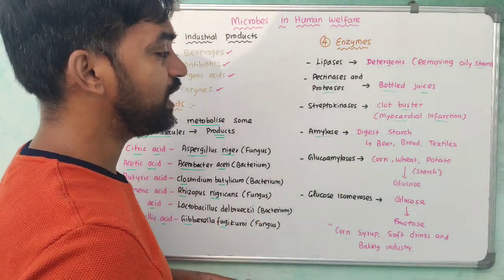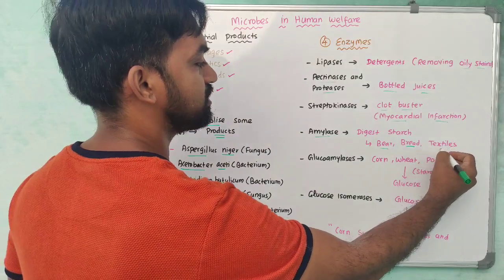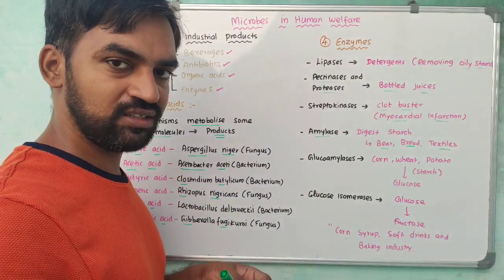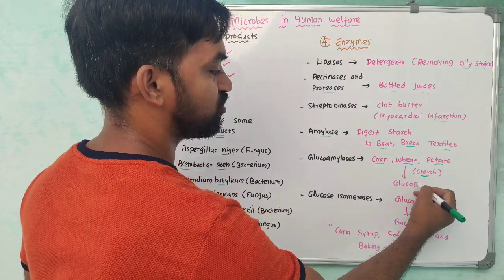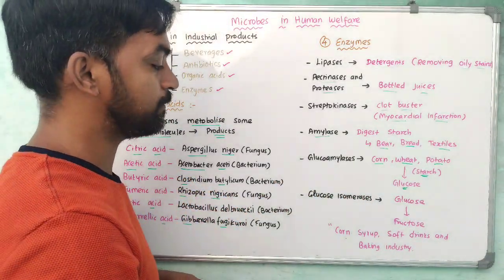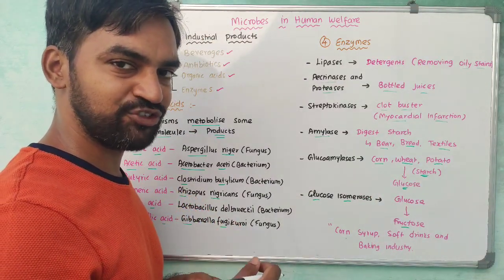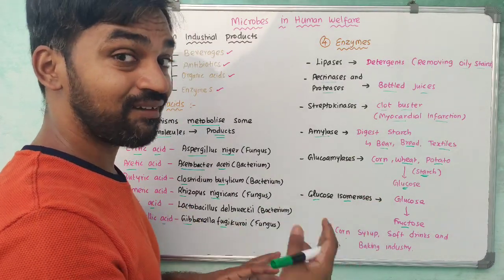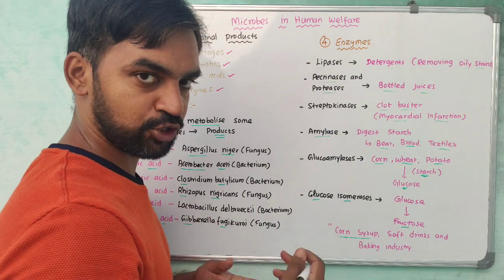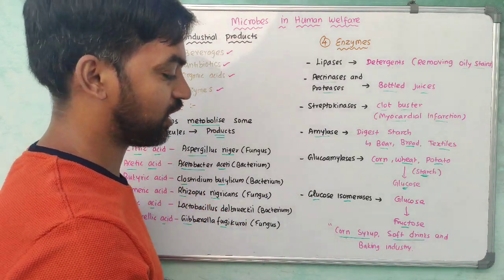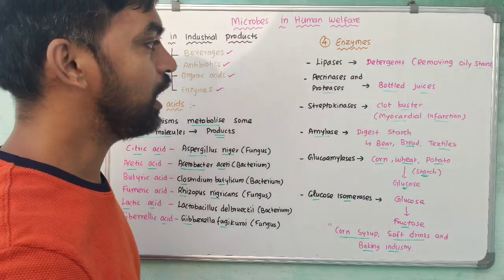Amylase digests starch and helps in beer making, bread making, and textiles. Glucoamylase converts corn, wheat, and potato starch into glucose. Glucose isomerase converts glucose into its isomers. Glucose isomerase is used in corn syrup production, and is used as a sweetener in the baking industry and in beverages like Coca-Cola and Pepsi.